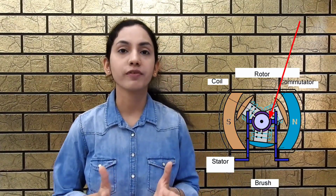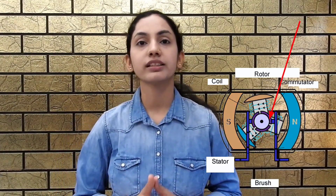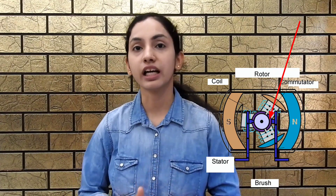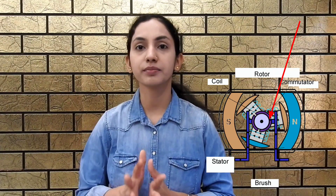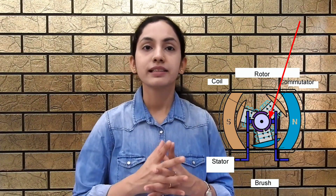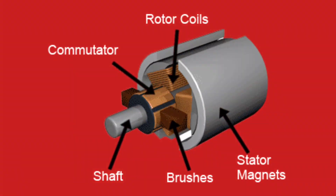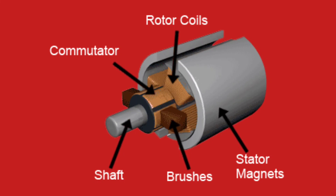Next is the commutator. The commutator of a DC motor is a cylindrical structure made of copper segments stacked together but insulated from each other using mica. Its primary function is to supply electrical current to the armature winding.